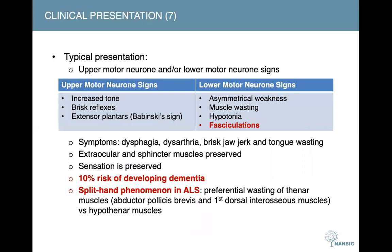Coming to the clinical presentations of motor neuron diseases. As mentioned, a typical presentation would show upper and lower motor neuron signs. We've prepared a table here for the different signs to look out for when suspecting a patient with motor neuron disease. One interesting thing to highlight is that extraocular and sphincter muscles tend to be preserved in motor neuron disease, as are the senses.